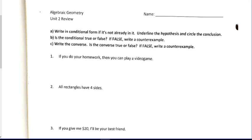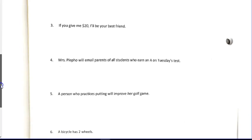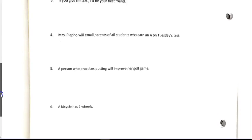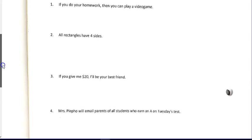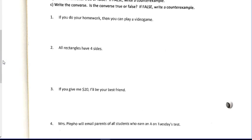Alright, review for unit 2 test. So read the directions. It says write in conditional form if it's not already in it. So look at number 1, 2, 3, 4, 5, and 6. The only place I see the word if is 1 and 3, but the only place I see if and then is number 1. So part a is done right here. That's the only one where part a is finished, the first part.